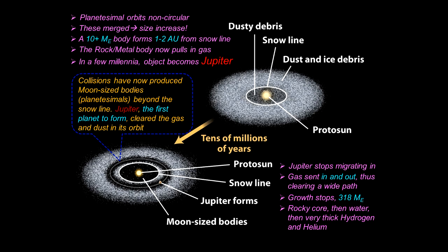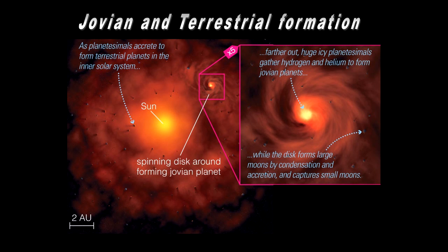Jupiter's gravitational tug on the gas either pulls it in or slings it outward or inward toward the inner solar system. Ultimately the growth of this massive body stops at about 318 Earth masses. Jupiter consists of a several-Earth-mass rocky core, a water ring around that, and then a vast majority of thick hydrogen and helium — that's what it mostly consists of.